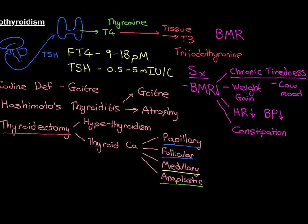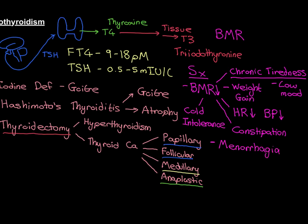Another obvious symptom: if you're consuming and burning fewer calories, your production of heat goes down and you can end up feeling cold a lot of the time. So cold intolerance is another major symptom. Finally, one that is a little more disconnected — in women, hypothyroidism can cause menorrhagia, which is the term for heavy periods. They can end up losing more blood each time they have a period than they would have done prior to having hypothyroidism.